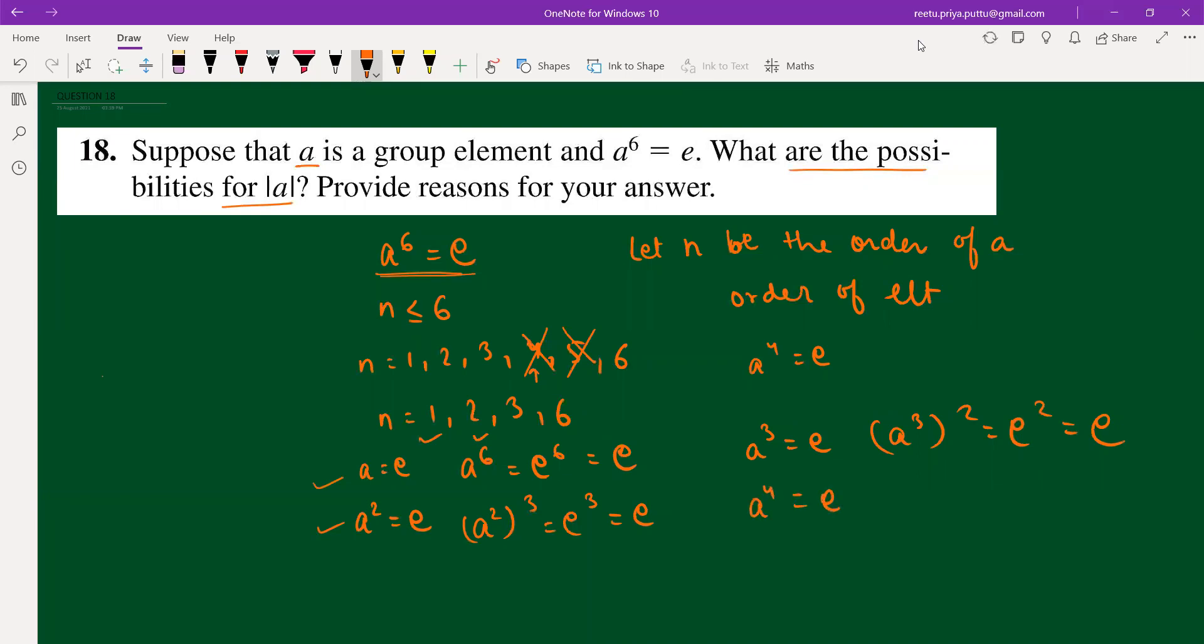If A to the power 6 is identity, and yeah, this is given. So it can be 1, 2, 3, and 6. So this is the reasoning.